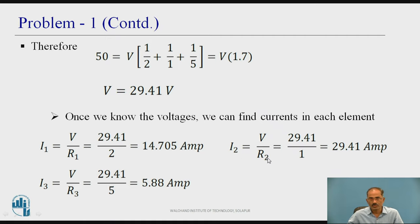Similarly, I2 equal to V by R2, which is equal to 29.41 divided by 1 ohm, which comes out to be 29.41 ampere. Similarly, I3 equal to V by R3, V given 29.41 divided by R3 is 5 ohm, which is equal to 5.88 ampere.